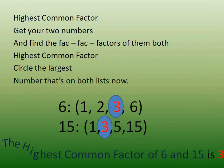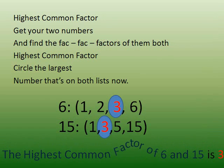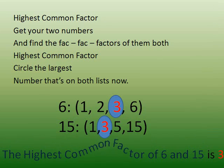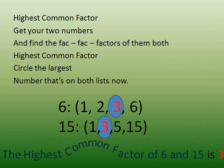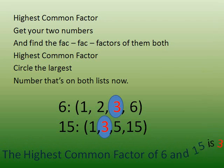Highest common factor: get your two numbers and find the factors of them both. Circle the largest number that's on both lists.